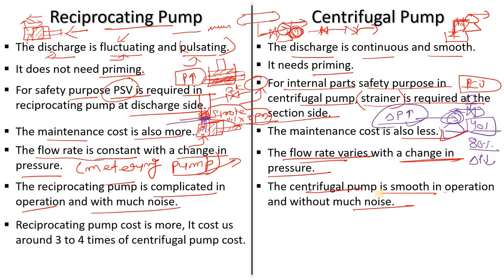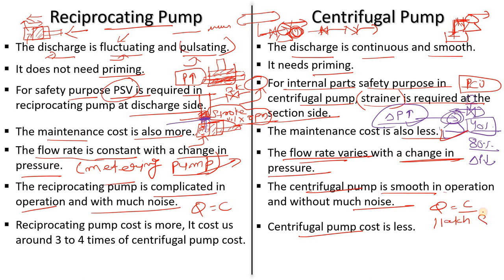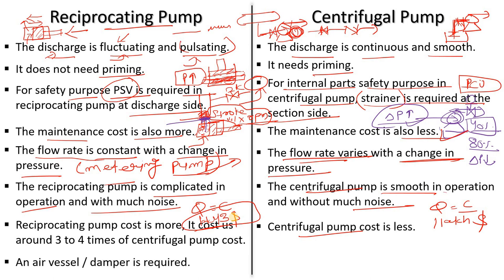From a cost point of view, for the same flow rate, if a centrifugal pump costs one lakh dollars, a reciprocating pump would cost around three lakh dollars. This is because the centrifugal pump is simple in construction, while the reciprocating pump has more complexity.